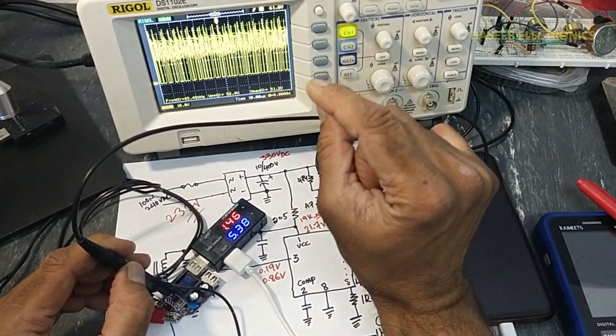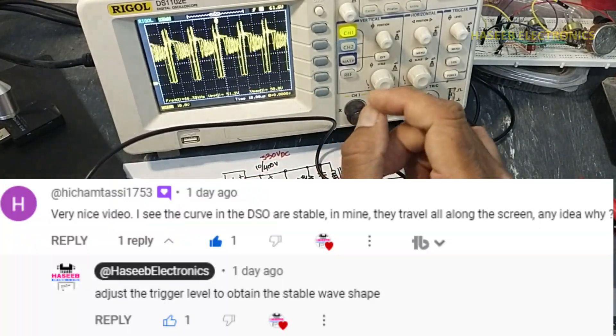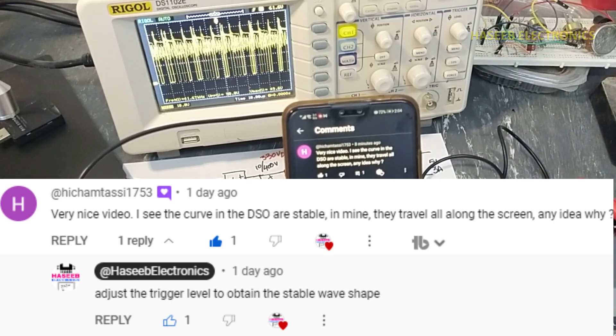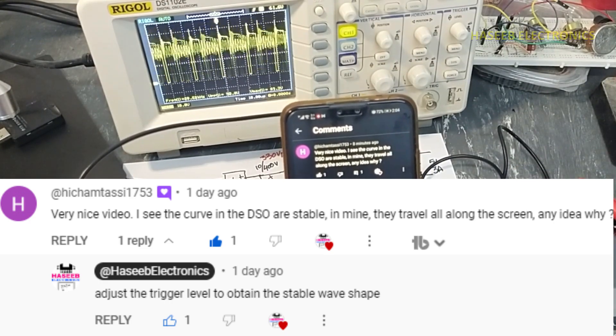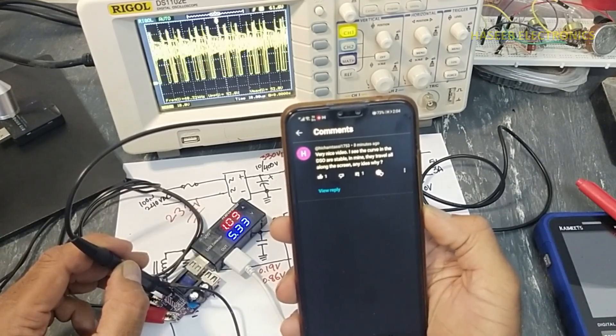How can we stabilize it on the display? This is a question from my viewer. He is saying that very nice, I see the curve in the DSO are stable, in mine they travel all along the screen, any idea?